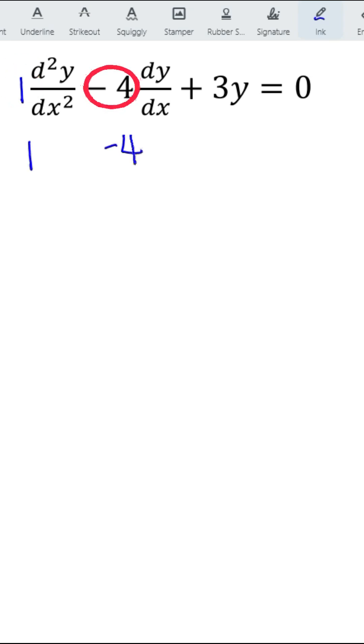So we have 1, negative 4, and positive 3. And we should give a variable to them. Let's say m.